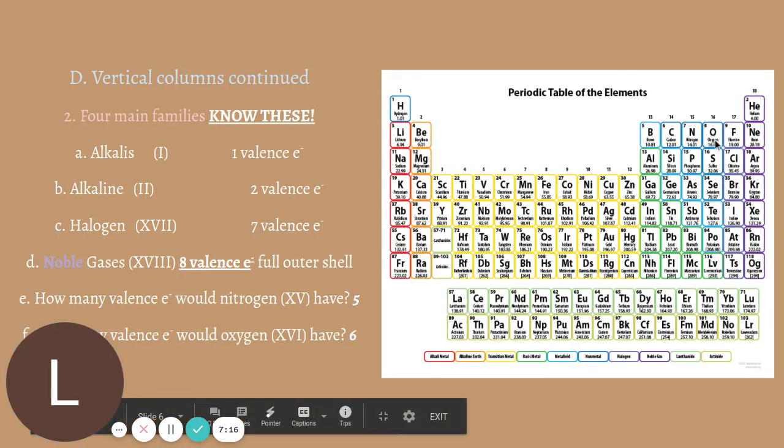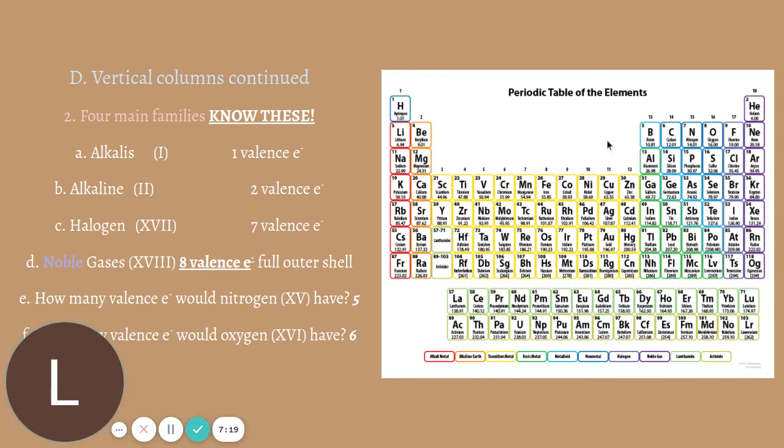The next says, how much does oxygen's group have? So again, one, two, skip a few, three, four, five, six. So oxygen's group has six valence electrons.